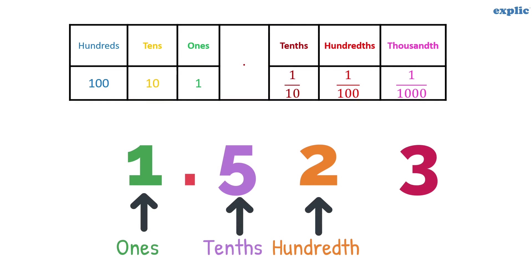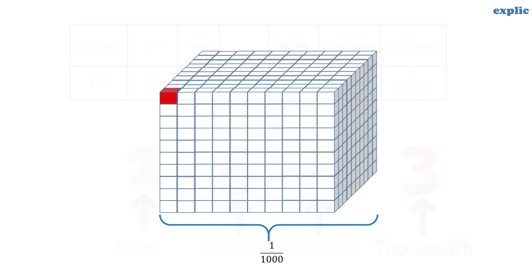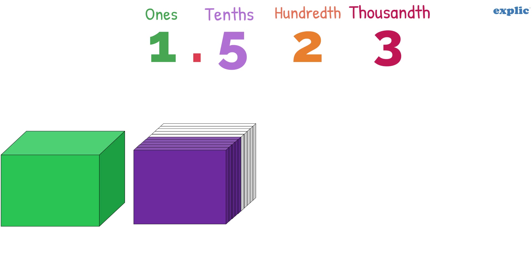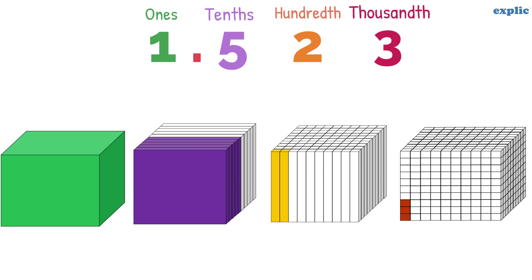The next place is the thousandth place, which means 1 part out of 1000 parts. 1.523 can be represented as 1 whole, 5 parts out of 10 parts, 2 parts out of 100 parts and 3 parts out of 1000 parts.